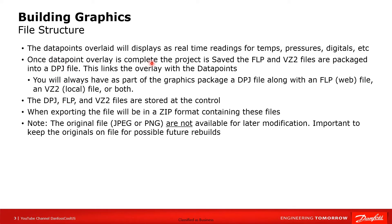Once the database overlay is complete, we take the files we've been working with and they get packaged. We make sure the overlay, the overlay data points, and the initial drawing — the JPEG for instance — are married together. That happens under the DPJ file, which is our project file. As part of a package you'll always have the project file, and included in that will be either an FLP or a VZ2, or both. They are stored in the control — that is where they reside.